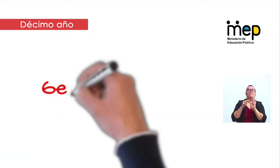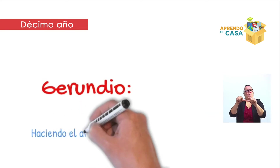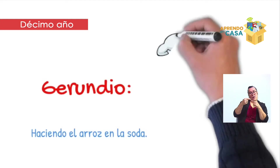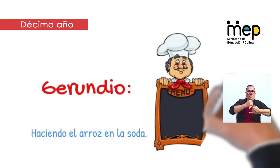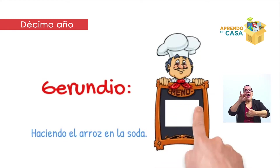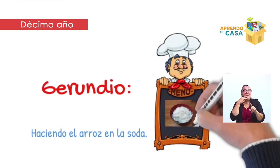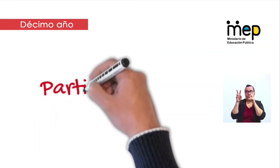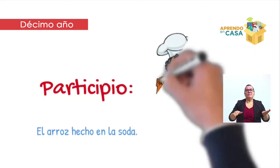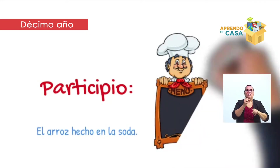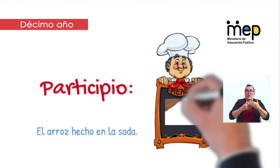Veamos algunos ejemplos. El gerundio tiene una característica durativa: cuando usamos un gerundio, el proceso no ha terminado. Por ejemplo, 'haciendo el arroz en la soda'; el proceso de cocción del arroz no ha terminado, continúa. Este aspecto durativo se utiliza en oraciones donde el verbo indica un proceso. Por su parte, el participio tiene un carácter perfectivo, significa que el proceso ha terminado. Por ejemplo, 'el arroz hecho en la soda'; el participio 'hecho' indica que el proceso de cocción ha terminado.